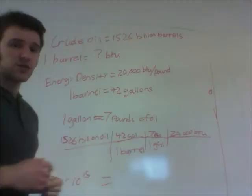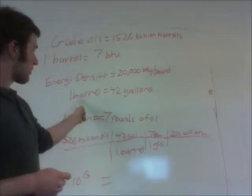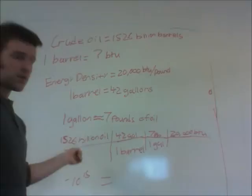So to get to pounds, first we have to convert from barrels to gallons, where one barrel equals 42 gallons of oil, then from gallons to pounds, where one gallon equals about 7 pounds.